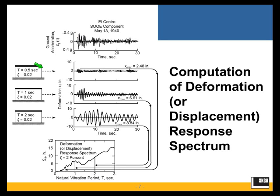The response of the first frame is shown in the top picture. You see that it is quick back and forth. And the maximum roof displacement, maximum lateral displacement of the roof is 2.48 inches.